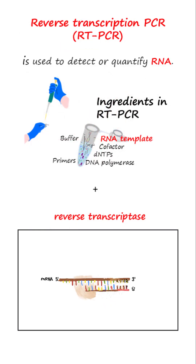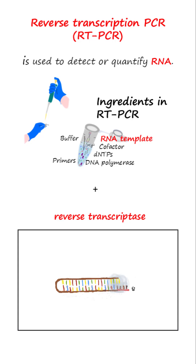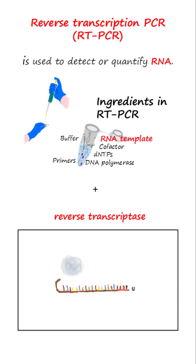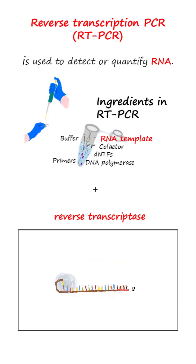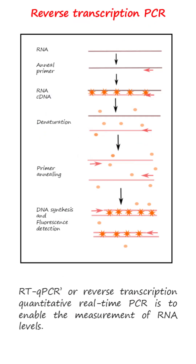RT-PCR, or reverse transcription PCR, on the other hand, is used to detect or quantify RNA. The reverse transcriptase enzyme is incorporated into the PCR mix in RT-PCR, so the RNA template generates complementary DNA, otherwise known as cDNA. Then double-stranded cDNA is generated by DNA polymerase and fed into a PCR-based amplification process. RT-qPCR is used to enable the measurement of RNA levels.